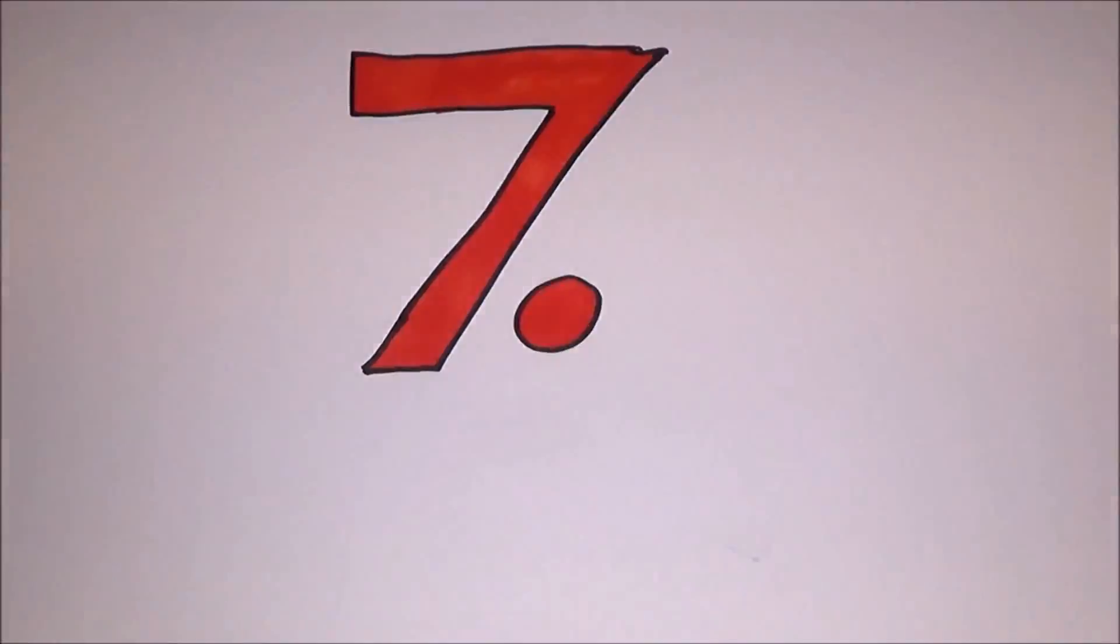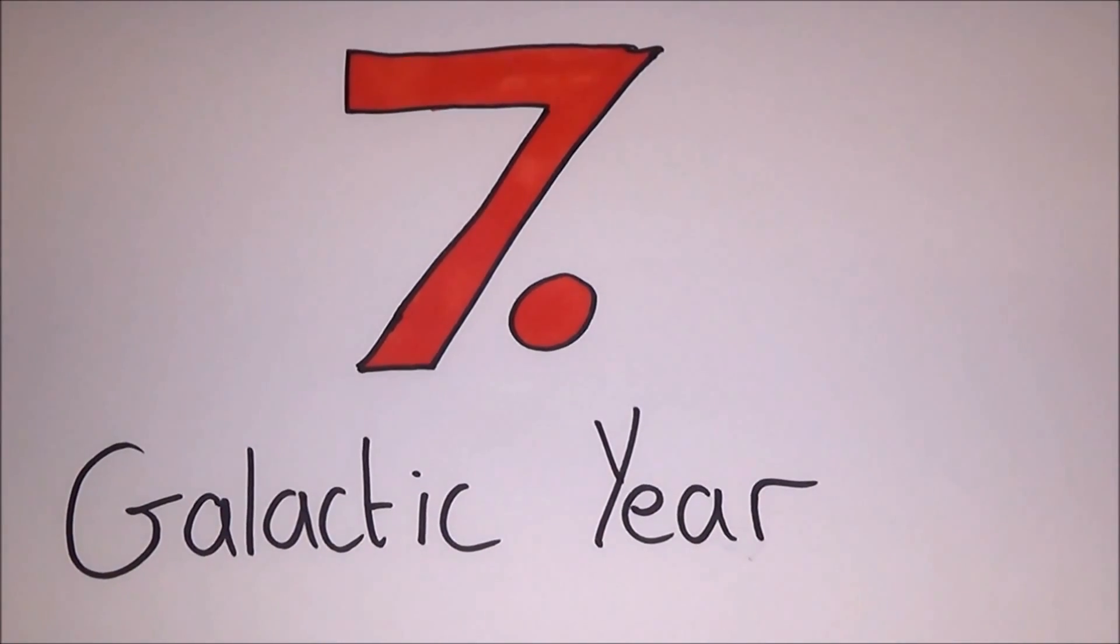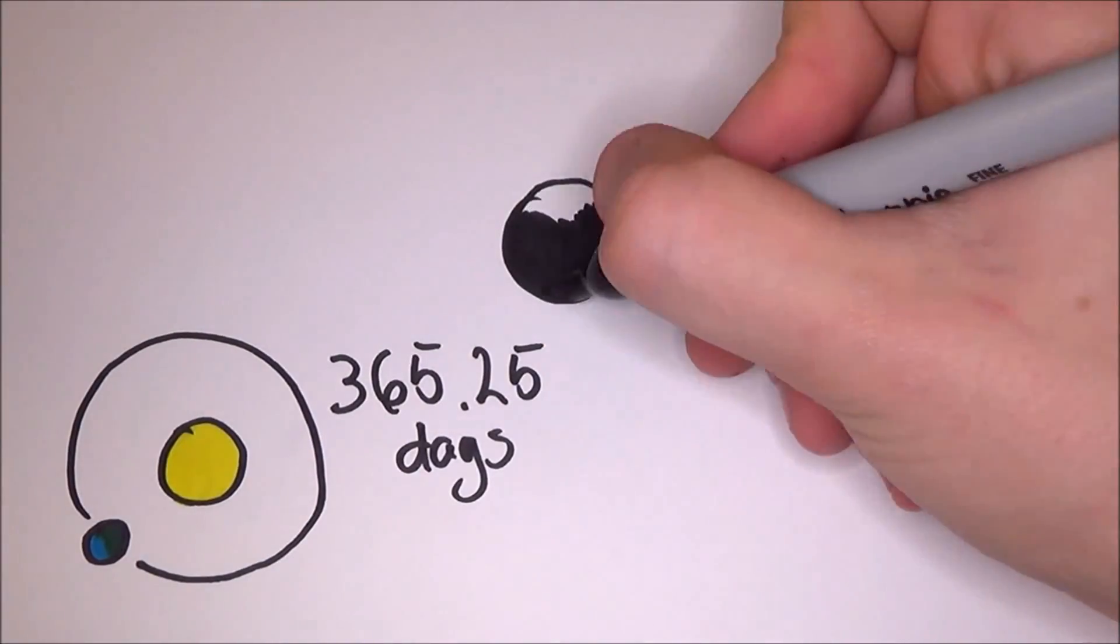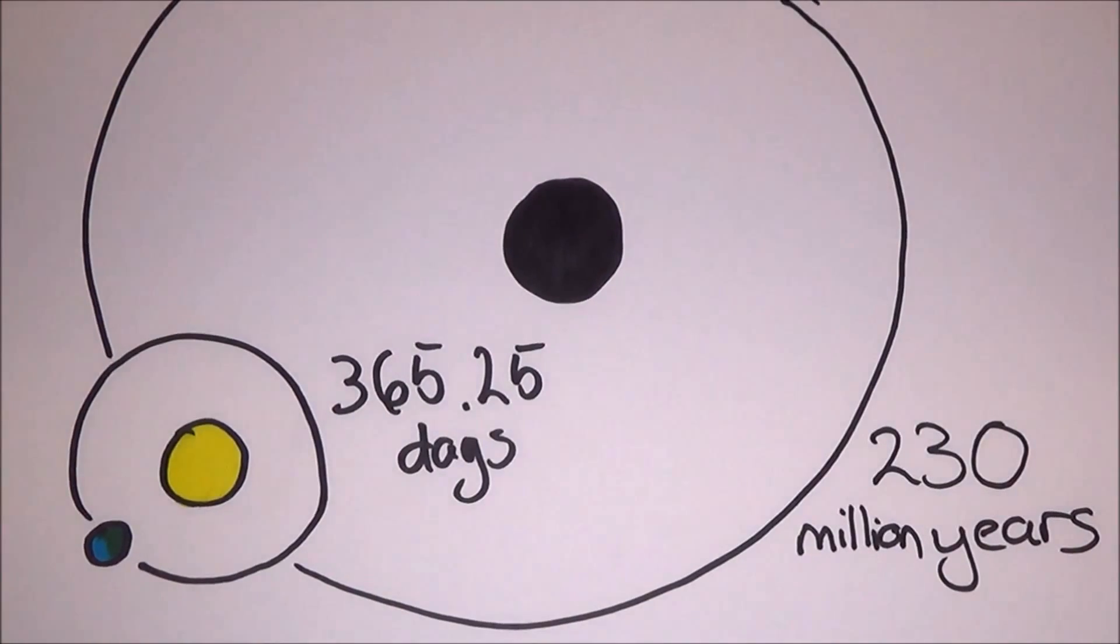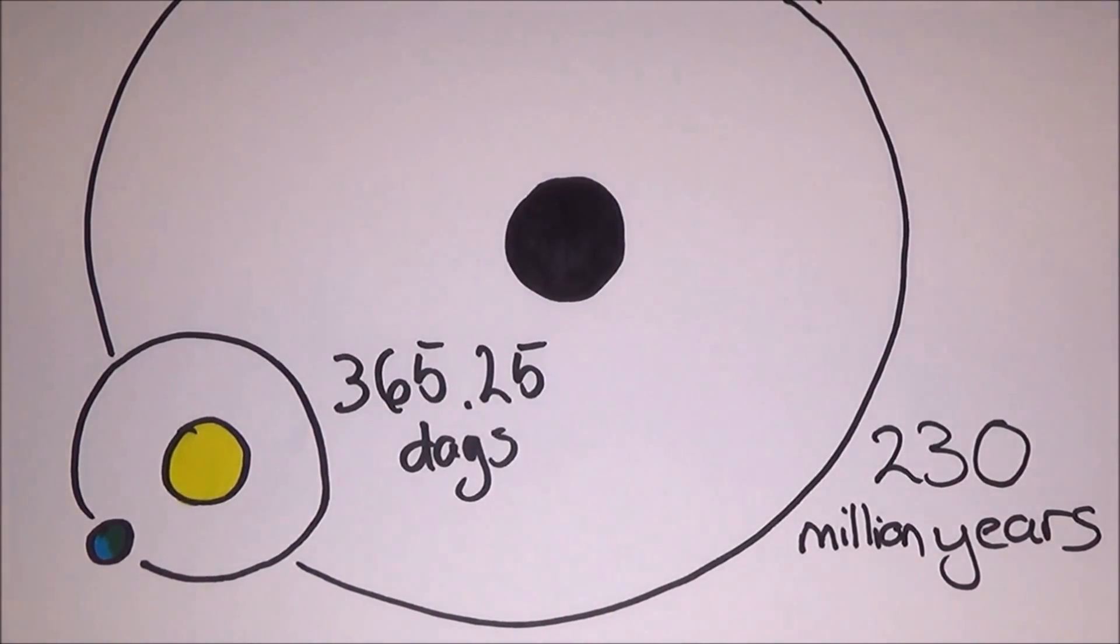Number 7. After the Earth's rotation, let's think bigger. Let's think galactic years. While our year only takes 365 and a quarter days, a galactic year takes about 230 million years. This means that last time we were where we are now, there were dinosaurs on the surface of the Earth.